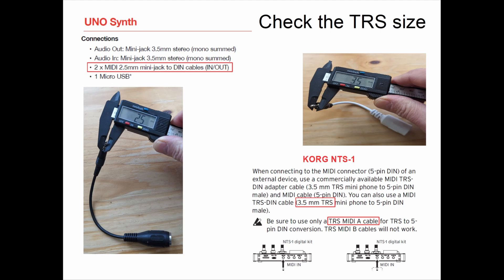If you look in your manual — for example, here in the IK Multimedia Uno Synth manual — it says it needs a 2.5mm mini jack. For the Korg NTS-1, it's a 3.5mm TRS jack, and it also tells you that it's a TRS MIDI Type A cable.